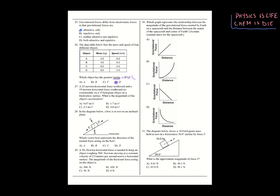Number twenty-seven: a 25-newton force acts northward and a 35-newton force acts southward on an object with a mass of 15 kilograms. Net force is 35 minus 25 equals 10 newtons southward. Using F equals ma: acceleration equals 10 divided by 15 equals 0.67 meters per second squared — less than one — choice A.